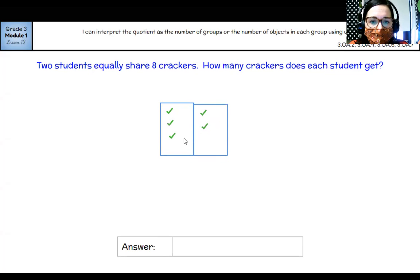three, four, five, six, seven, eight. I use the fair share strategy there. So when I'm thinking about what I just did, I just did eight crackers divided between two students means that each student gets four crackers.